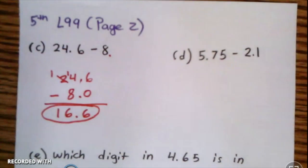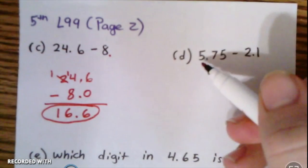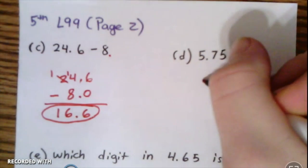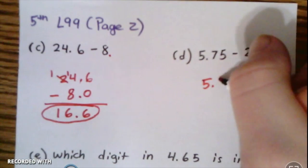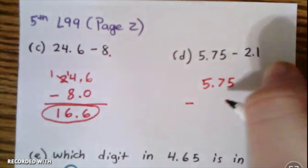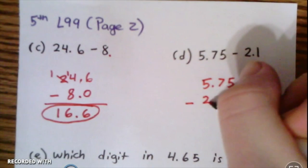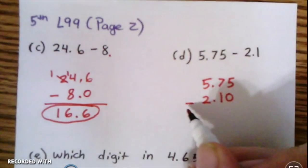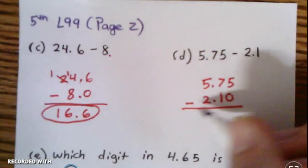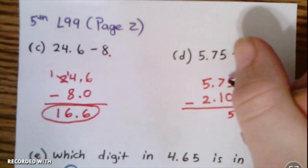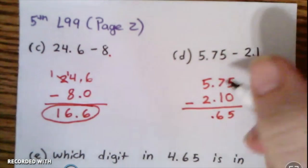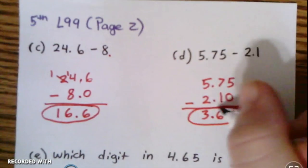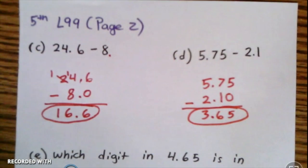Let's try d. In this case I don't have to pin any decimals because they both already have one, so I'm just gonna write 5.75 minus 2.1. I'll add in a zero there. 5 minus 0, 7 minus 1 is 6, 5 minus 2 is 3. So I get 3 and 65 hundredths.